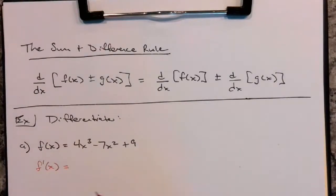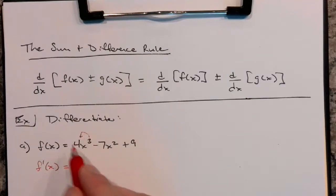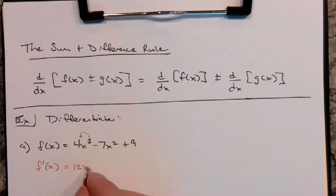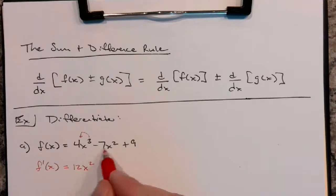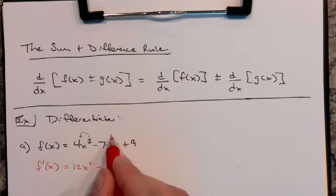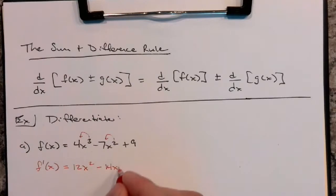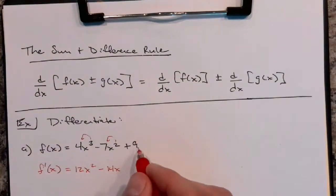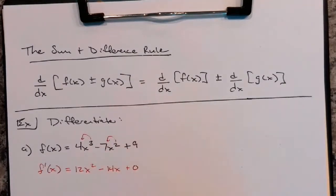So f′(x) is equal to: taking the derivative of 4x³ — remember how the power rule works, you bring the 3 down in front, so 3 times 4 is 12, times x to the 3 minus 1, so the power becomes 2. For the next term, negative 7 times x squared: bring the 2 down, 2 times negative 7 is negative 14, x to the 2 minus 1 is just the first power. Then the derivative of a constant — the derivative of 9 — for a constant the derivative is always 0, so I put plus 0.